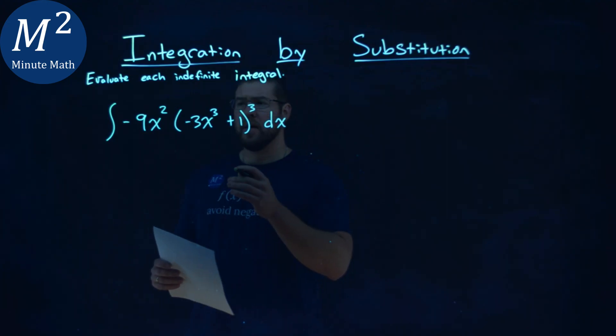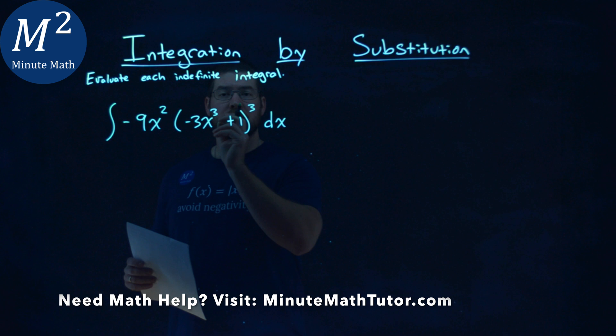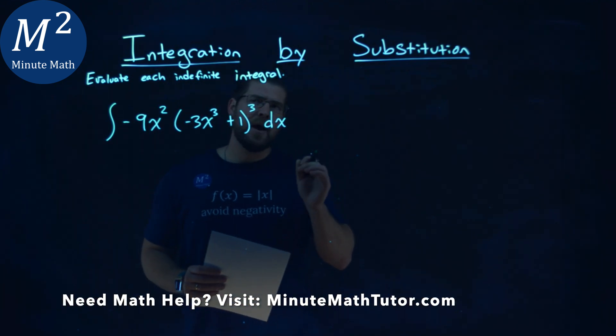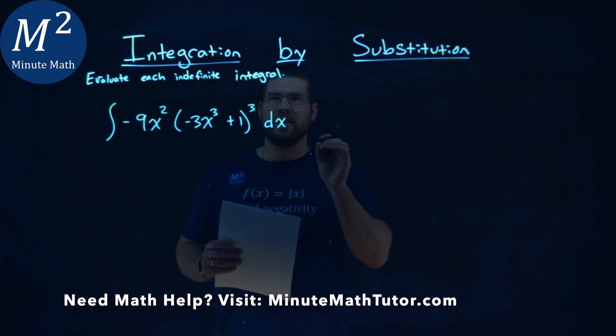We're given this problem right here, the integral of negative 9x squared times negative 3x to the third plus 1 to the third power dx, and we have to evaluate this indefinite integral.